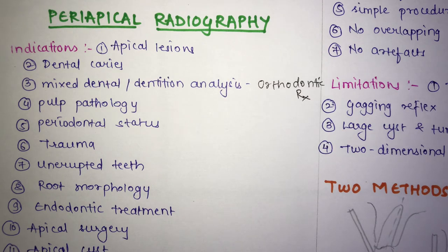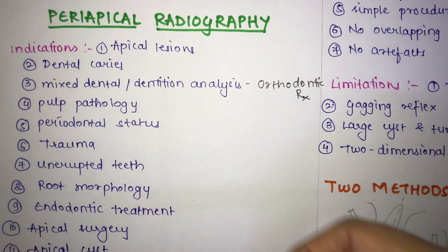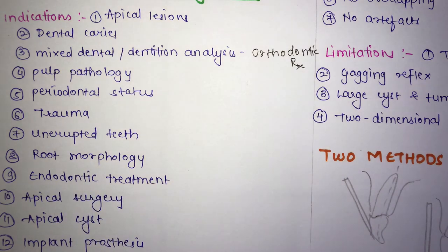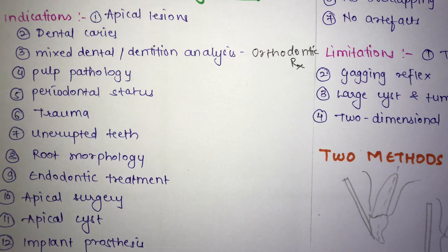Next is trauma — periapical radiography is useful in detecting trauma associated with the tooth and surrounding bone, including fractures and the class of fracture. Then, unerupted teeth — assessment of the presence and position of unerupted teeth is an indication. Next is root morphology — assessing root morphology before extraction, for example in cases of dilaceration, diversion, fusion, or ankylosis.